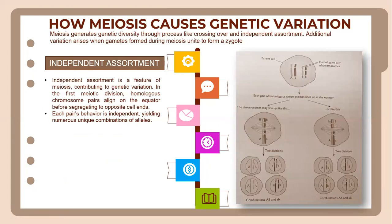This process results in each chromosome having different combinations of alleles than it did before. This is how independent assortment happens. Independent assortment is a feature of meiosis contributing to genetic variation. In the first meiotic division, homologous chromosome pairs align on the equator and are then segregated into two opposite cells, with each pair behaving independently, producing numerous unique combinations of alleles.